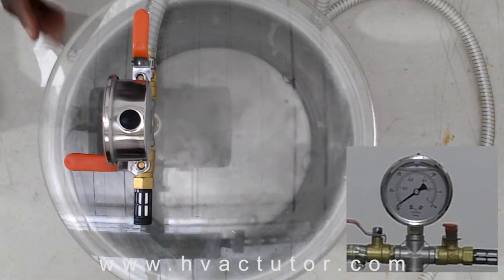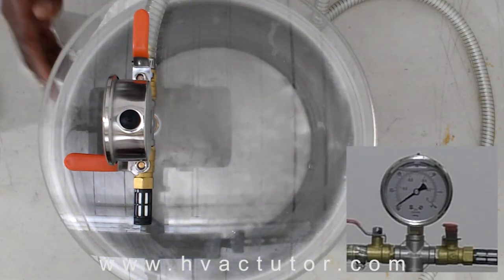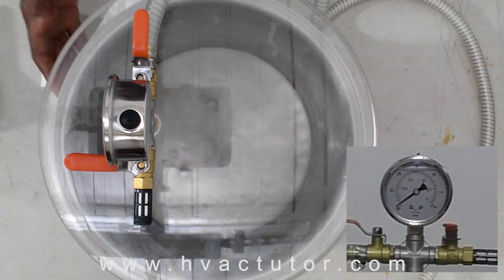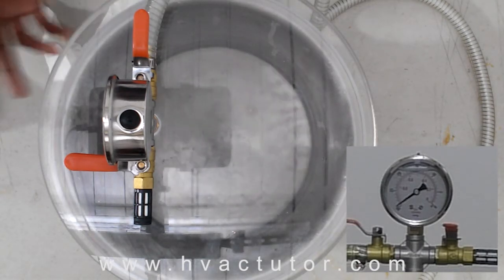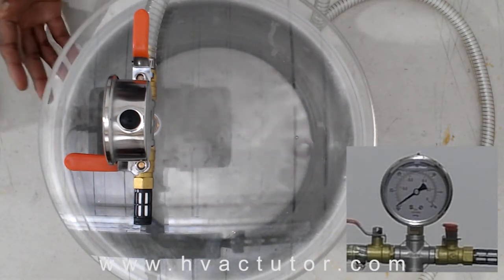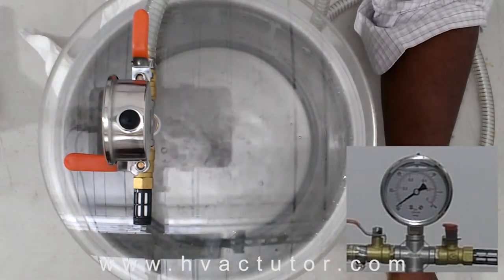Normally inside of an evaporator, we don't want the refrigerant, in this case our water, to boil itself. We want it to absorb heat from the outside of the evaporator. I'm going to turn off my vacuum pump.